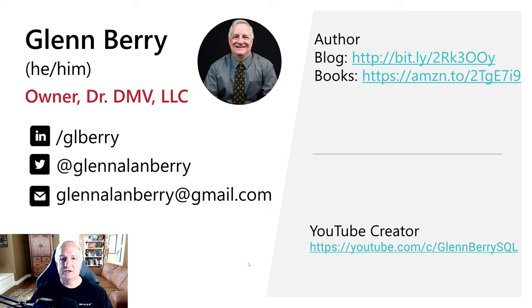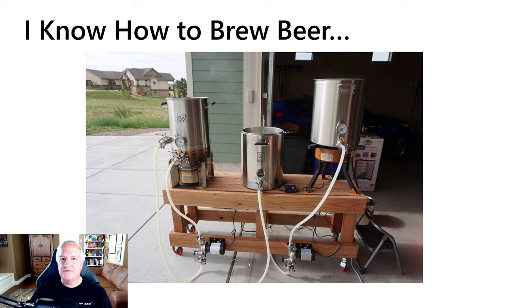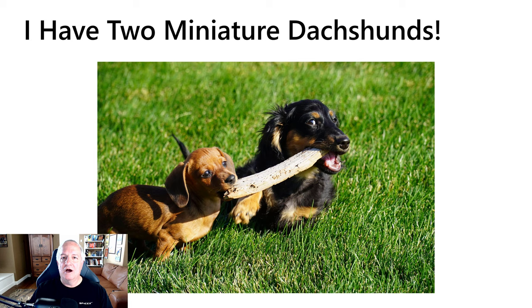This is my 'Yay Me' slide with my contact information, including my Twitter handle where I'm very active, my email address, my blog, and my YouTube channel. I know how to brew beer and I've been doing all-grain brewing, five-gallon batches for about five years — it's a very fun hobby. I also have a couple of miniature dachshund puppies: the red female named Andui, and the black-and-tan male named Chorizo.